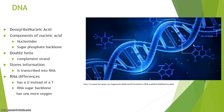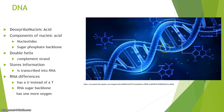Deoxyribonucleic acid means that the ribose is actually lacking an oxygen that normal ribose would have. Additionally, the DNA backbone has a phosphate group. These phosphates actually connect the different sugars together, which is what forms the strand you see here on the outside. That's made up of the sugars and the phosphates, commonly referred to as the sugar-phosphate backbone.